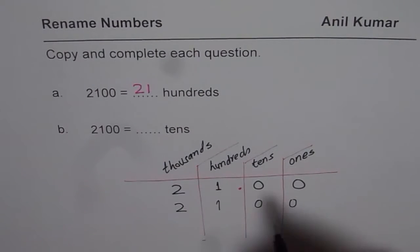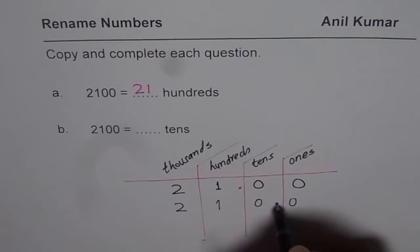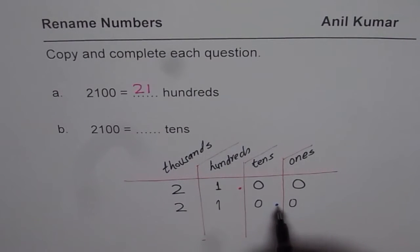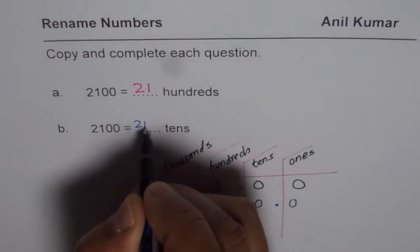To write it as tens, we will put decimal after the tens place. So once you put decimal here, you get 210 on the left side of decimal. That is what it is.